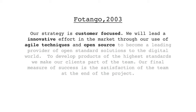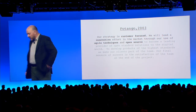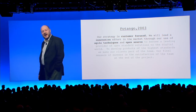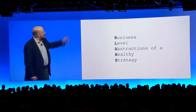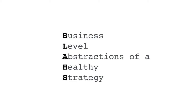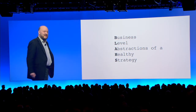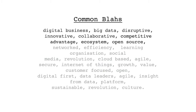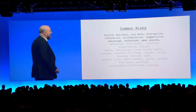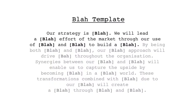So I was really worried that people would rumble that I didn't know what I was doing. So I went around recording other CEOs talking about strategy. I used to record the short words they would use — what I call business-level abstractions of a healthy strategy, or BLAS for short. So I do this every couple of years. This is 2014. These are the common BLAS: digital business, big data, disruptive, innovative, collaborative, competitive advantage. If you did it today, you'd probably put AI, IoT, a bit of blockchain in there. You've got to have a bit of blockchain. And so then I created a BLAS template: 'Our strategy is BLAS. We will lead a BLAS effort of the market through our use of BLAS and BLAS to build a BLAS.'